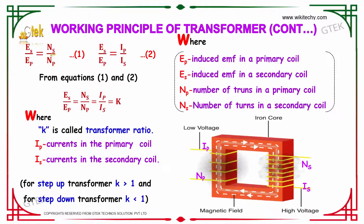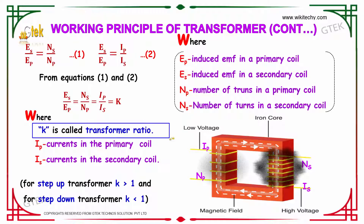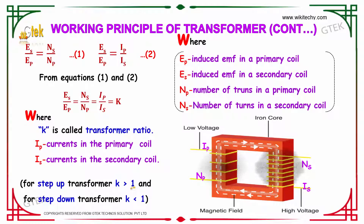Equating the right-side terms of both equations, we get ES divided by EP equals NS divided by NP equals IP divided by IS, which equals K, where K is referred to as the transformer ratio. For a step-up transformer, K is greater than 1, whereas for a step-down transformer, K is less than 1.